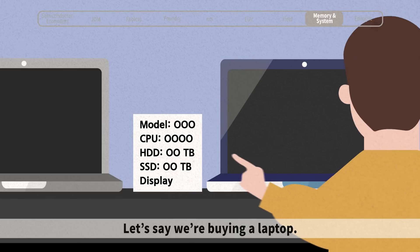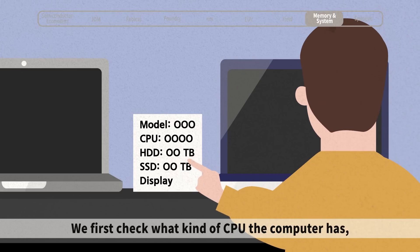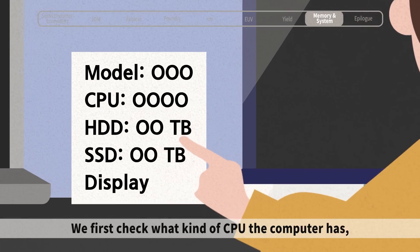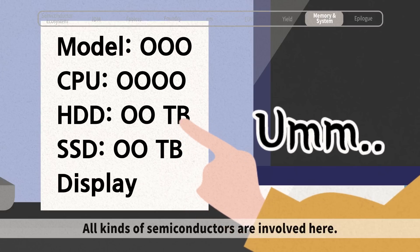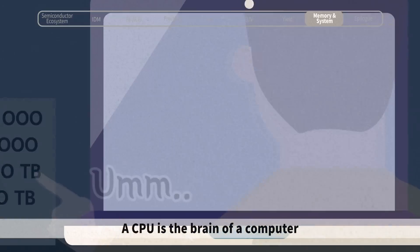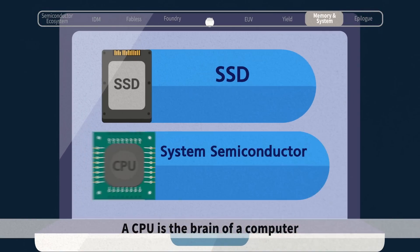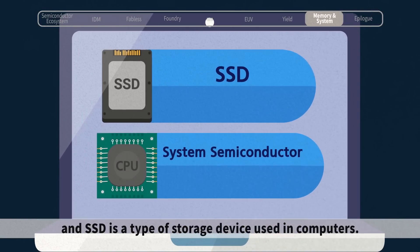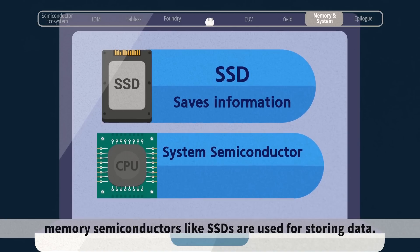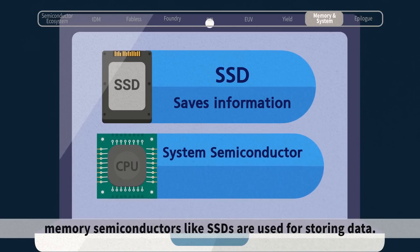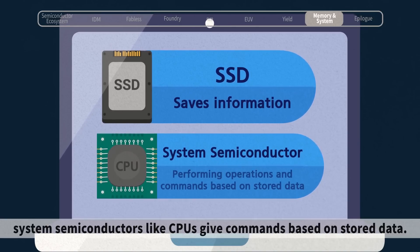Let's say we're buying a laptop. We first check what kind of CPU the computer has and how big its SSD is. All kinds of semiconductors are involved here. A CPU is the brain of a computer, and an SSD is a type of storage device used in computers. Memory semiconductors like SSDs are used for storing data, while system semiconductors like CPUs give commands based on stored data.